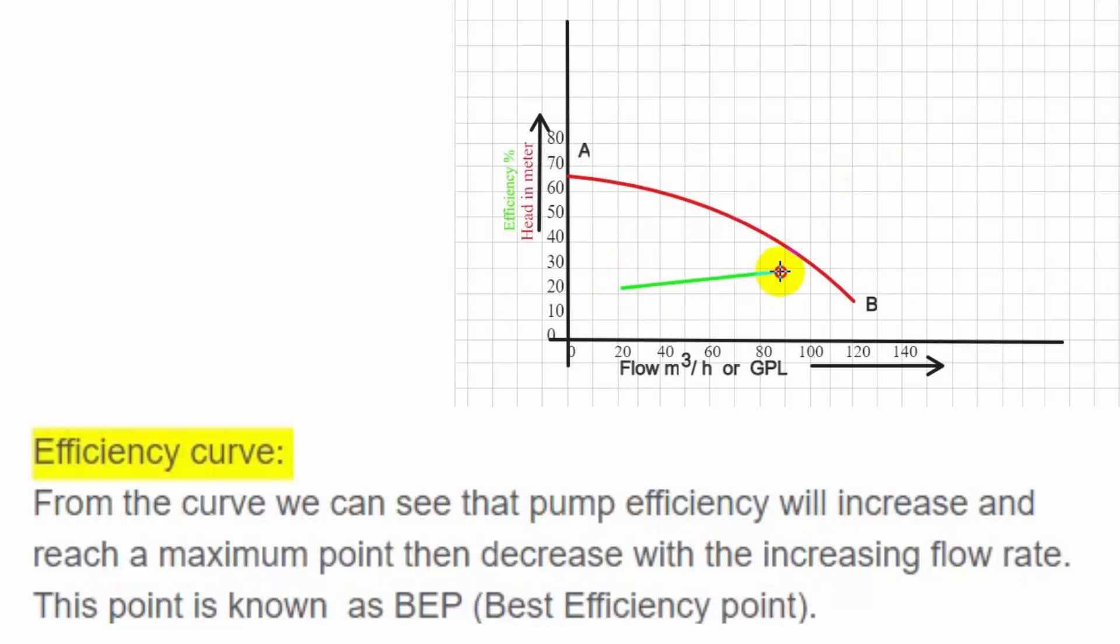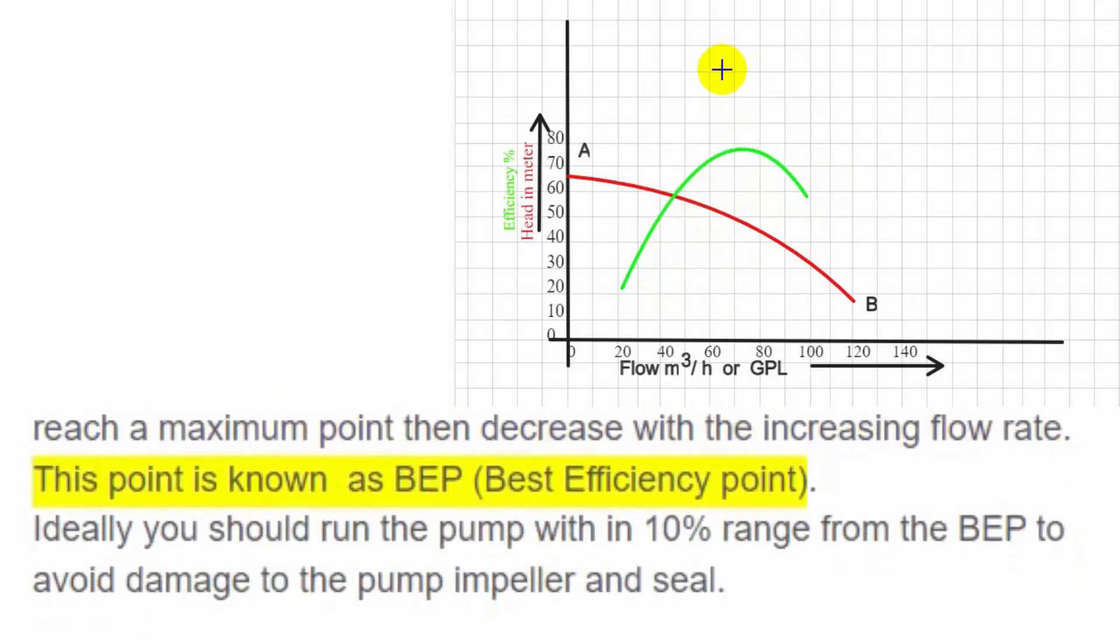Efficiency curve. From the curve we can see that pump efficiency will increase and reach a maximum point, then decrease with the increasing flow rate. This point is known as BEP, best efficiency point.